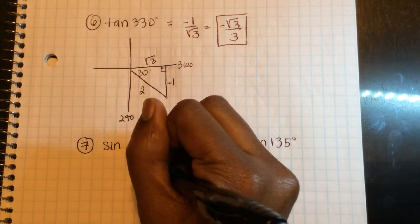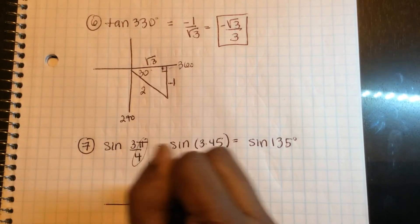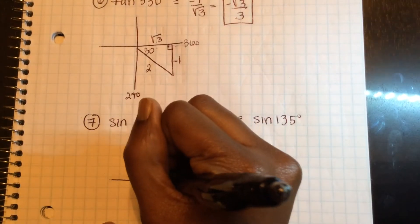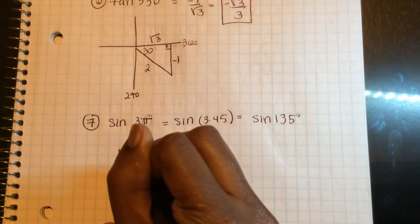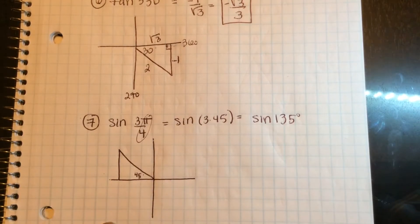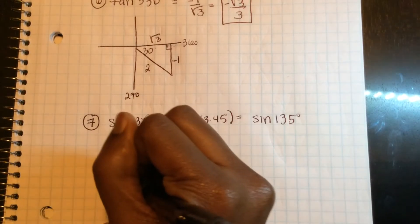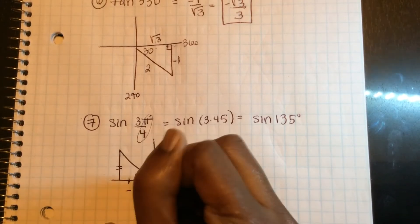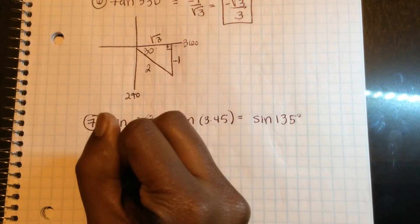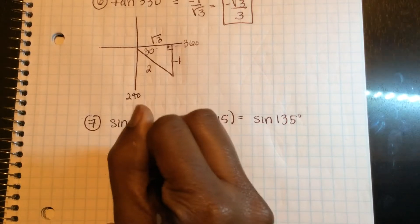So if I think about 135 degrees, it's going to be somewhere here. This is going to be 45 degrees, my reference angle. So that means this side has to be negative 1 because it's in the negative direction. This side is positive 1, and this is square root 2.